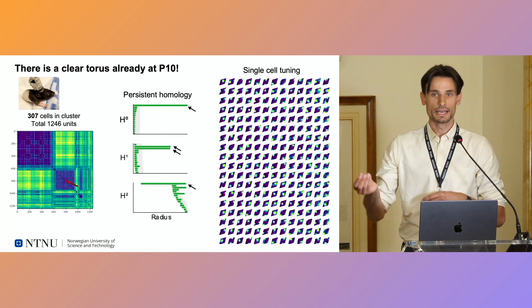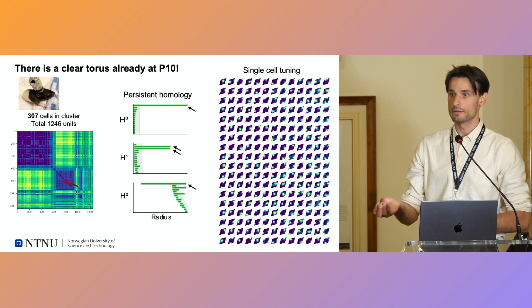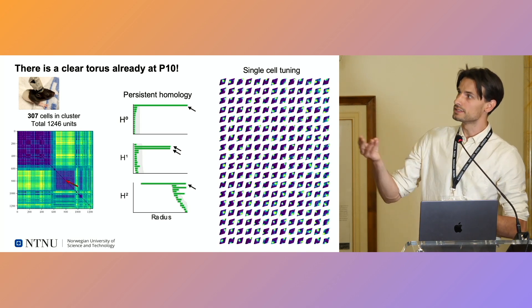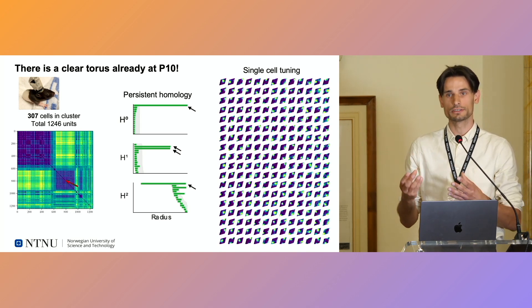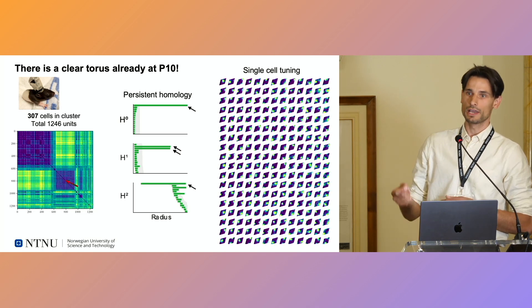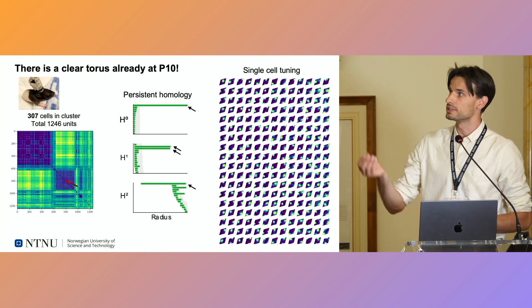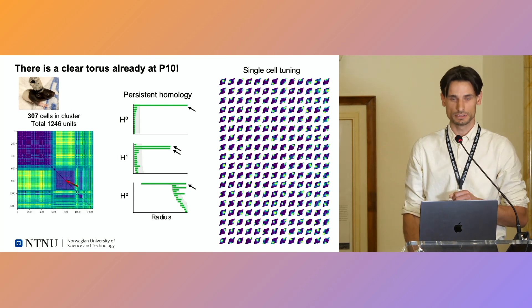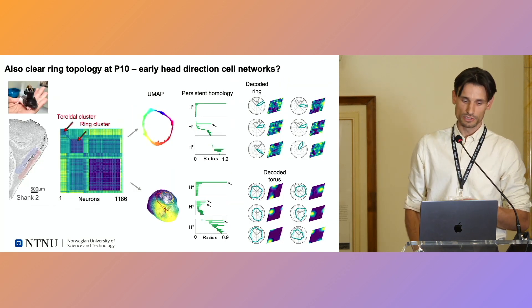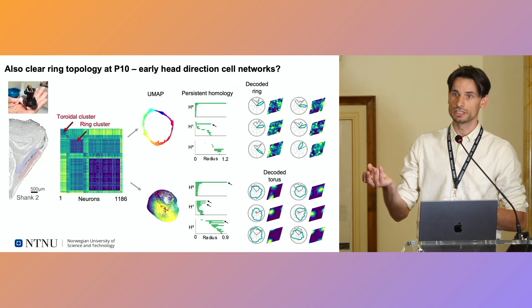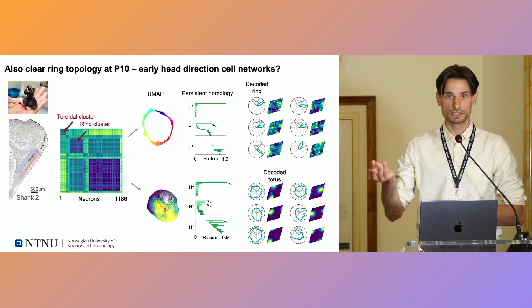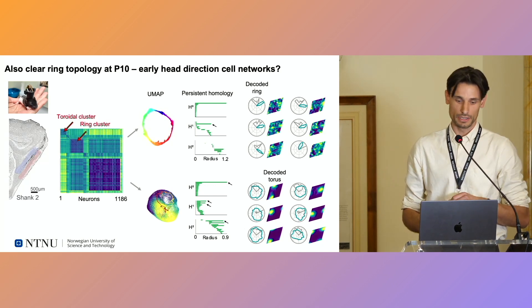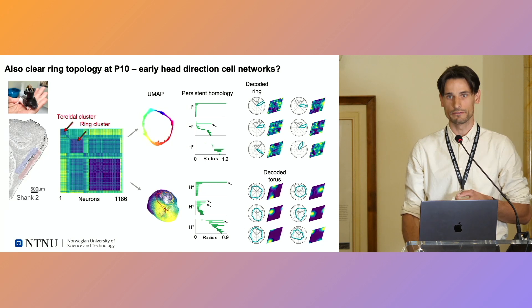Indeed, already at postnatal day 10 — before their eyes and ears open — we can detect clusters with a clear topological signature, and single-cell responses to the decoded torus that have adult-like responses. We also see clear ring topology in some ensembles, indicating that the head-direction cell network is also formed before active exploration.